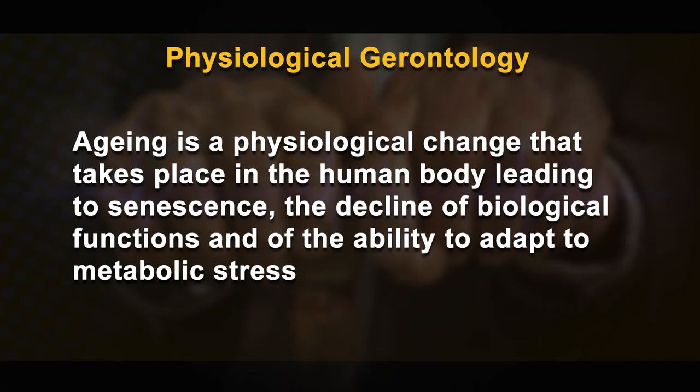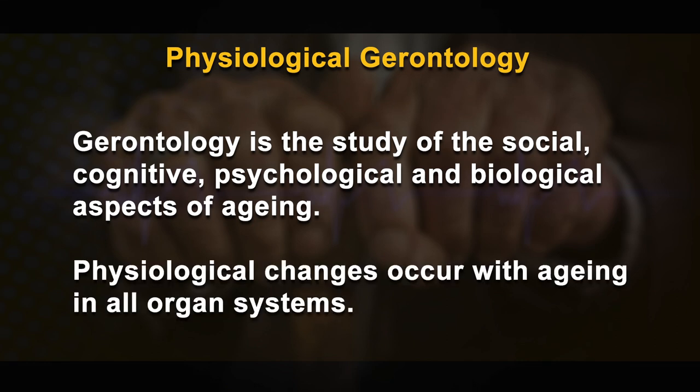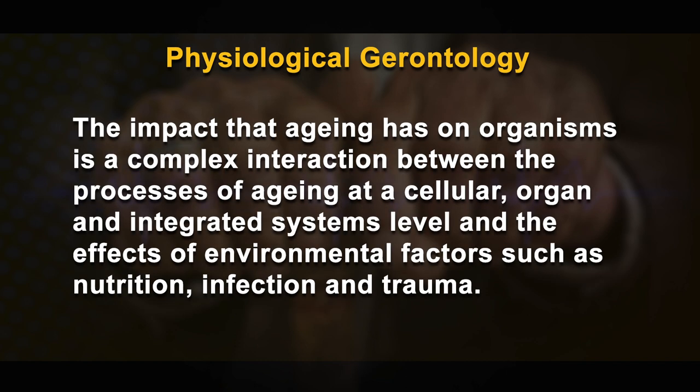Aging is a physiological change that takes place in the human body, leading to the decline of biological functions and of the ability to adapt to metabolic stress. Physiological changes occur with aging in all organ systems, representing a complex interaction between the process of aging at cellular, organ, and integrated systems levels, and the effects of environmental factors such as nutrition, infection, and trauma. The incremental fall in possible performance is part of the progressive diversity in physiology — the true hallmark of aging. Physiological gerontology deals with the physiological changes and processes associated with aging.